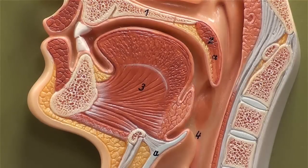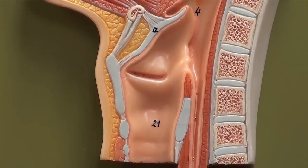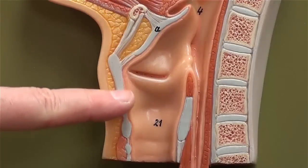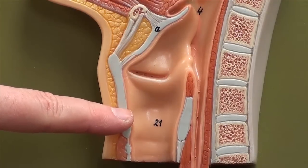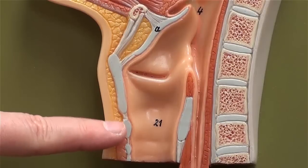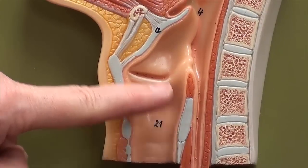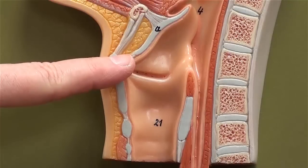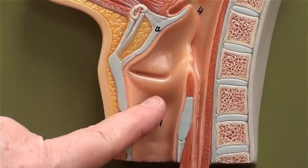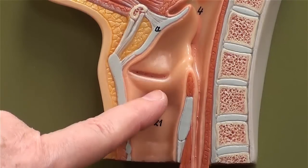Now let's look a little more inferiorly and look at the larynx and the laryngopharynx. These cartilages represent the cartilages that make up the larynx. This is the posterior part of the cricoid. This is the epiglottis. When inside of this structure, we're in the larynx. The wall contains a true and false vocal cord — false and true.